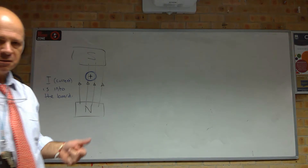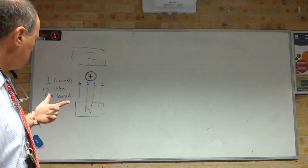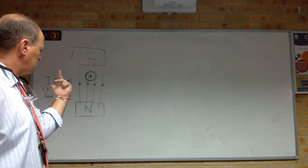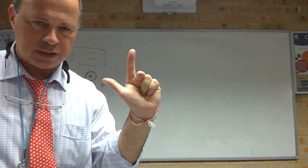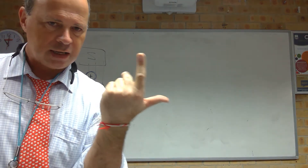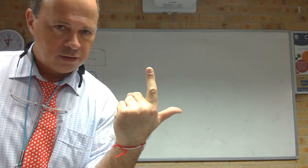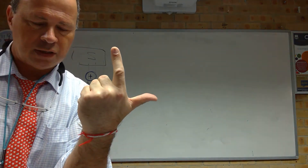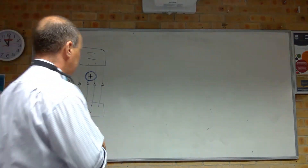Okay — force, field, current: left hand motor rule. Field is up the page. Current — if I put my hand this way the current would be coming out of the board, but we want it going into the board, so we need to turn around. The current is going into the board and the field is going from north to south up the board, so our force is going...